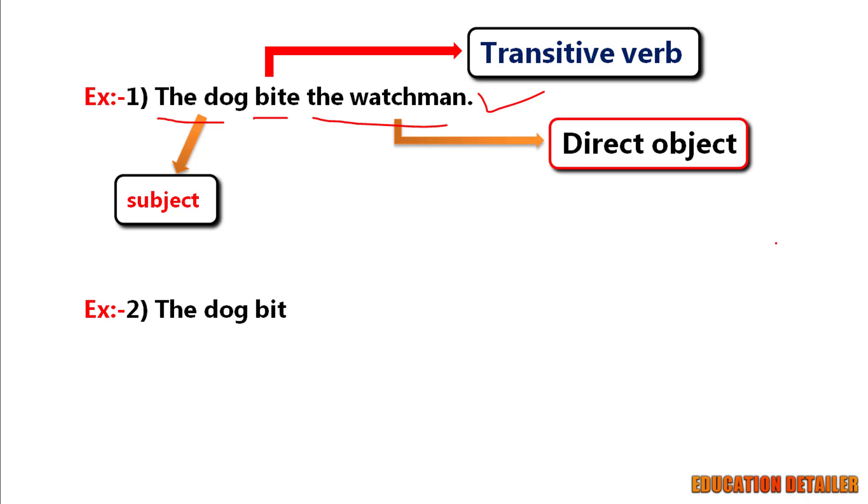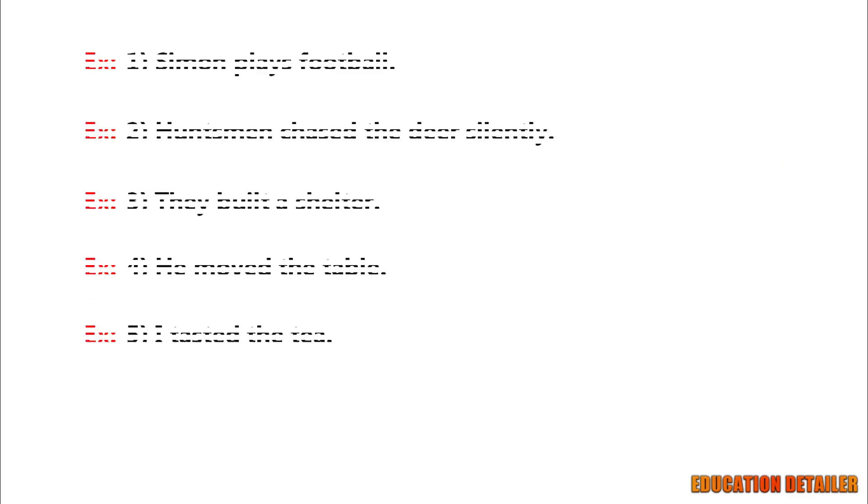Without the direct object, it doesn't make any sense. So the transitive verb requires an object to make sense. In the same way, you can easily find out the transitive verbs from these examples.